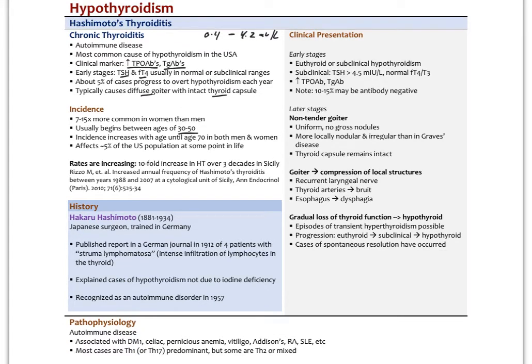Hakaru Hashimoto was a Japanese surgeon who trained in Germany in the late 1800s and early 1900s. He published a report in 1912 of four patients with what he described as struma lymphomatosa — hypothyroidism without iodine deficiency. These patients were iodine-replete, but their thyroids were infiltrated with lymphocytes. In 1957, this was recognized as an autoimmune disease.